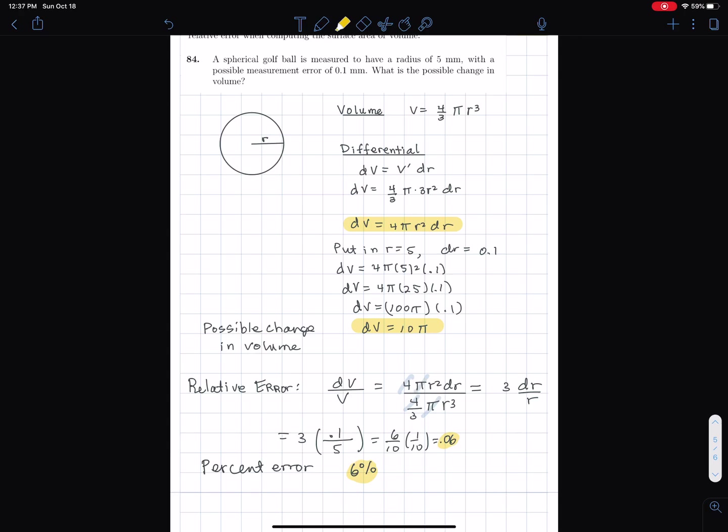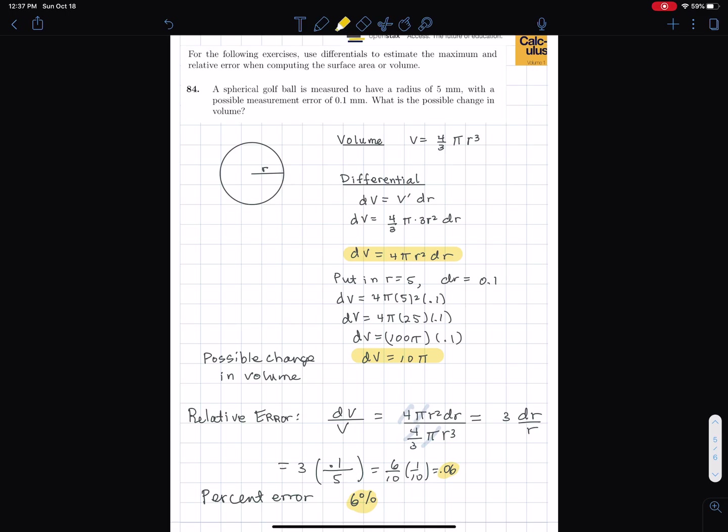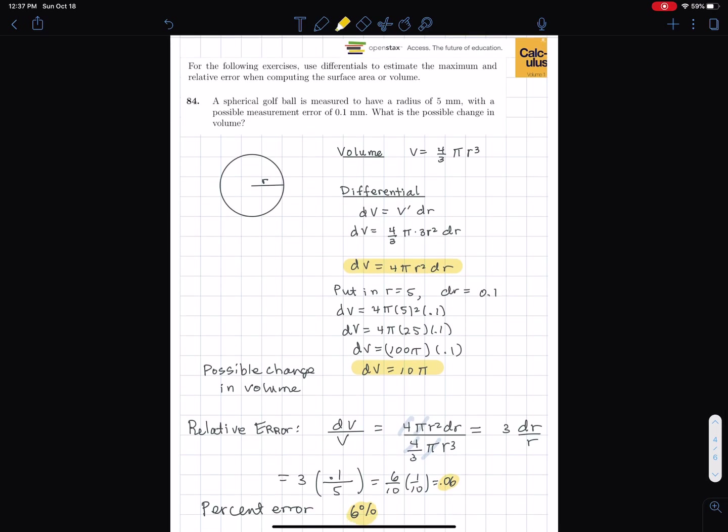So what it's saying is that the relative error in the radius is 0.1 divided by 5, so that's 0.02. That's the relative error in the radius, but then you multiply it by three and you get the relative error in the volume. These are just plugging into formulas. I have a differential formula and then I have the relative error formula. The percent error is simply taking 0.06 and moving the decimal two places. So a lot of this is just plugging into formulas. It's the understanding of what a differential is and why it works that takes a little bit more.